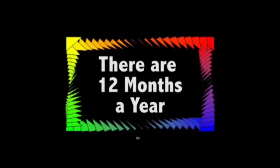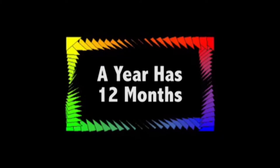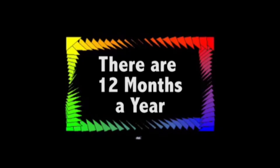January, February, March, April, May, June, July, August, September, October, November, December — there's 12 months in a year. A year has 12 months, there's 12 months in a year.